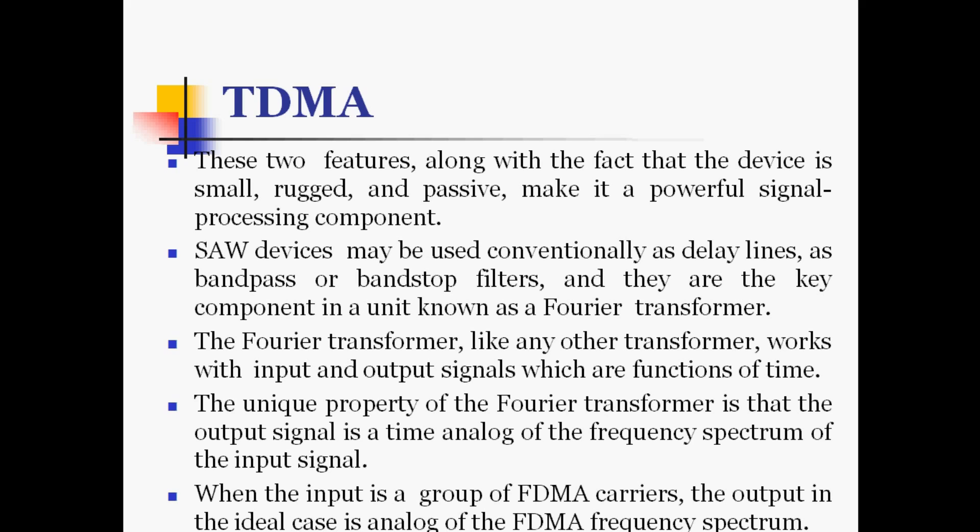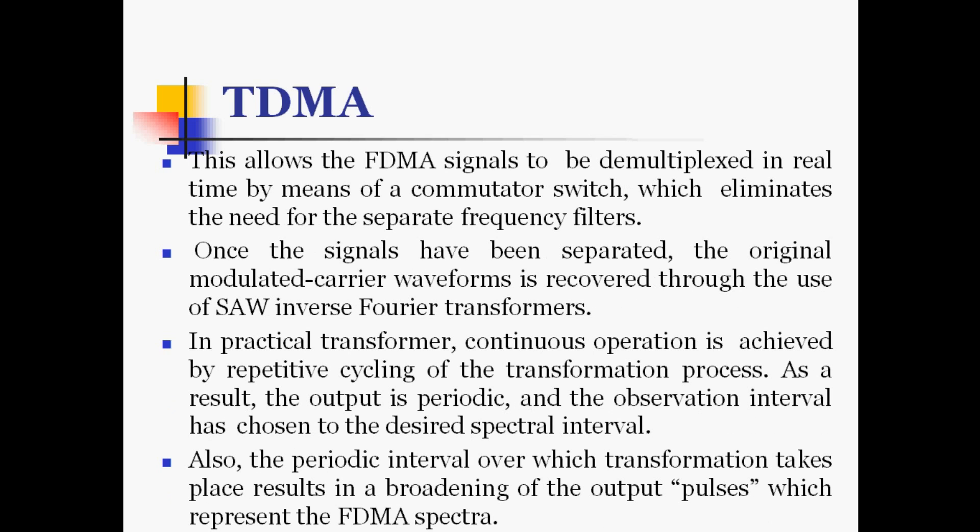In addition, the electrodes are readily shaped to provide a wide range of useful transfer characteristics. These features, along with the fact that the device is small, rigid, and passive, make it a powerful signal processing component. Surface acoustic wave devices may be used as delay lines, band pass or band stop filters, and are the key component in the Fourier transformer. The Fourier transformer works with input and output signals as functions of time; its unique property is that the output signal is a time analog of the frequency spectrum of the input signal.